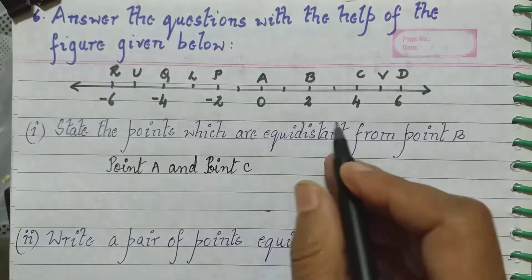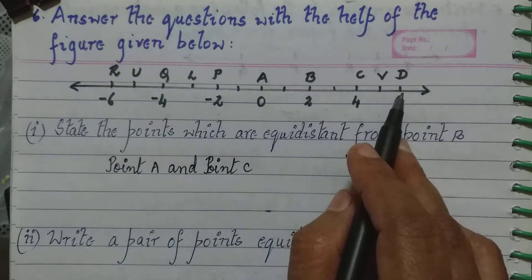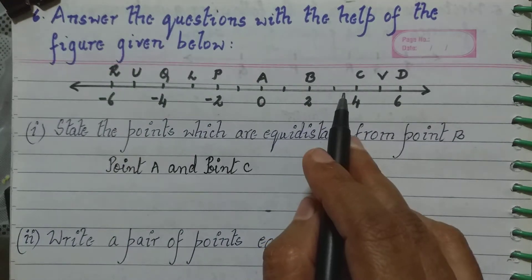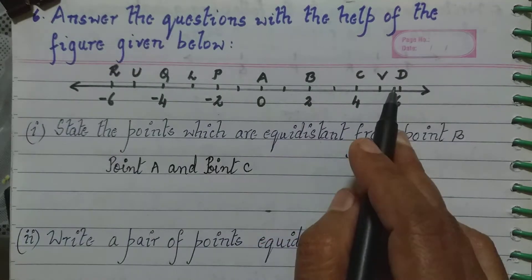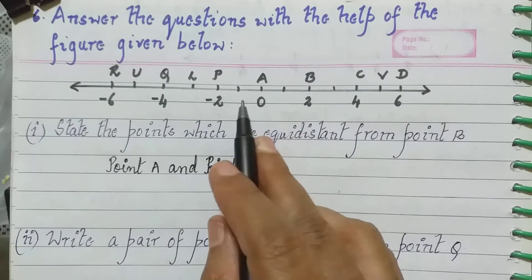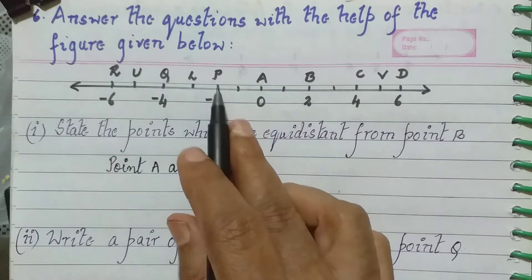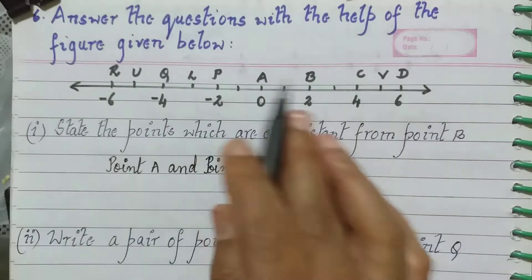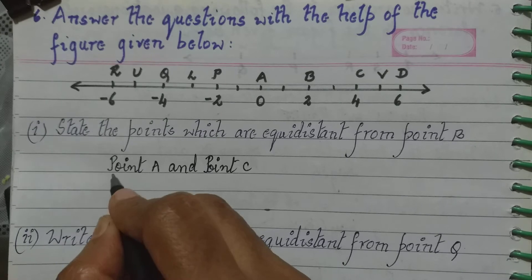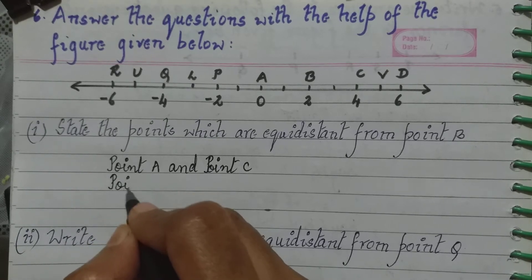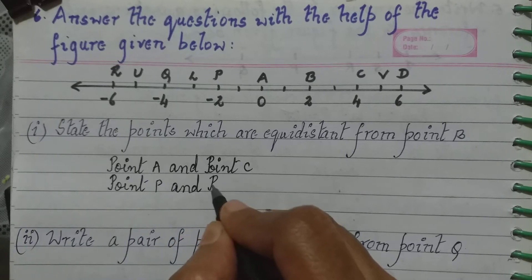Do we have one more option? If you see point D, it is at a distance of one, two, three and four units — so D is at a distance of four units. From B, going left, four units we reach another point. So that pair is also equidistant from point B. We can write point B and point D as another answer.